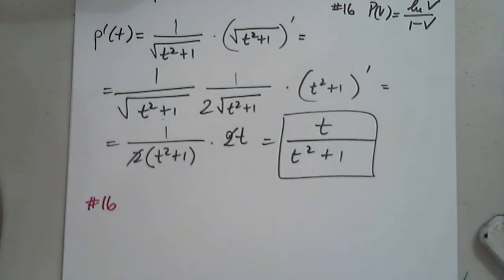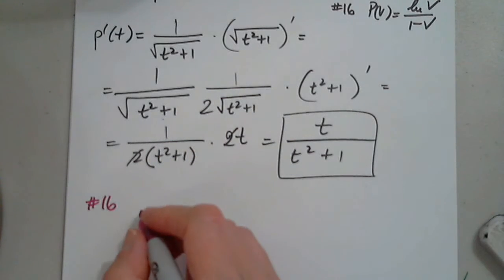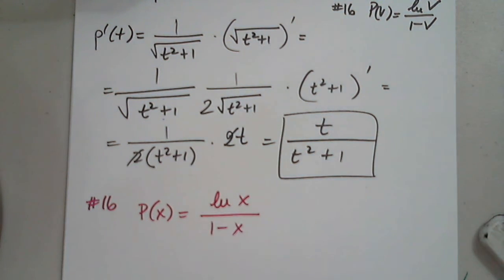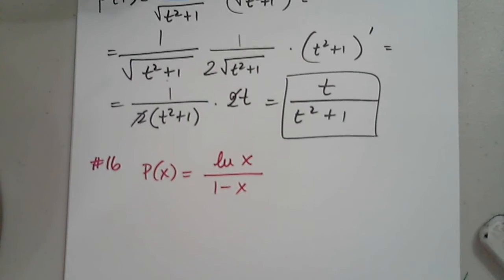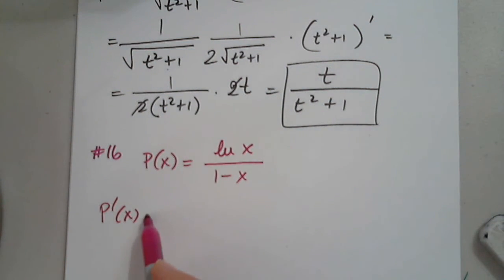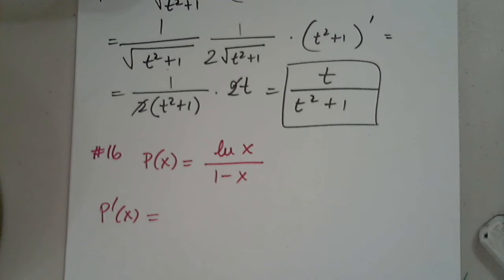Let's look at number 16. I'm going to change the variable to x: natural log of x divided by 1 minus x. So p prime — what rule do I apply here? The quotient rule.